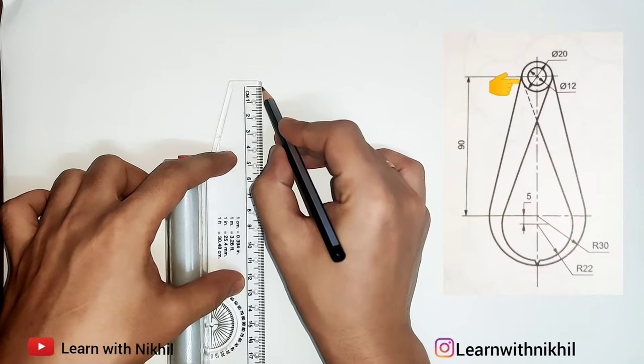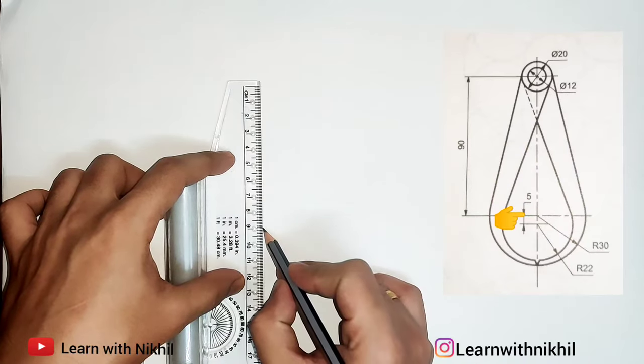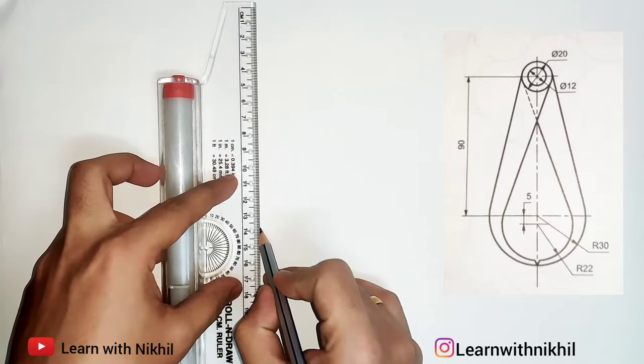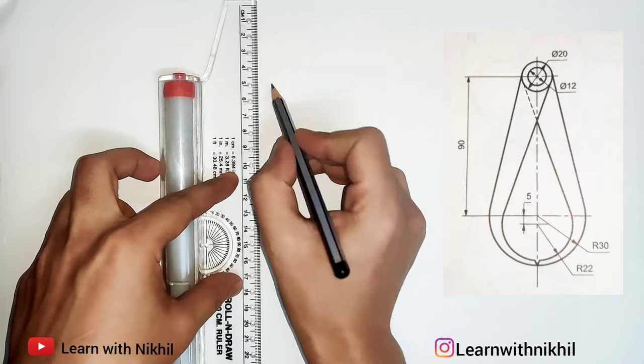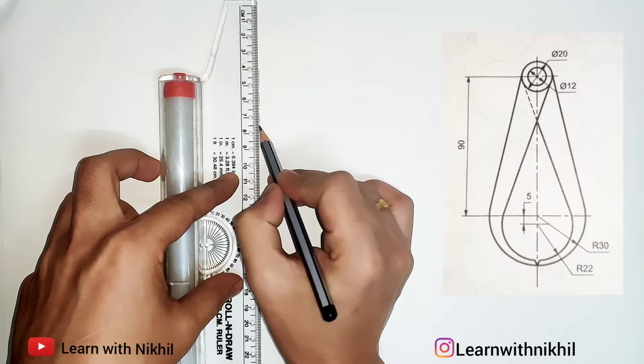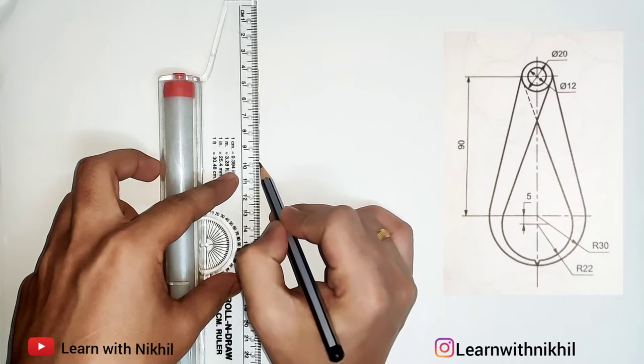So this is the first point and this is the point 90 millimeter below. I'll draw the center axis line through them, which is given in the question—that is big gap, small line, gap, big line.